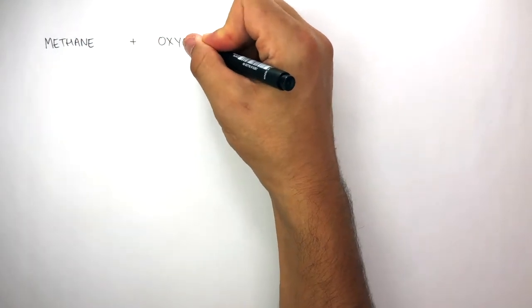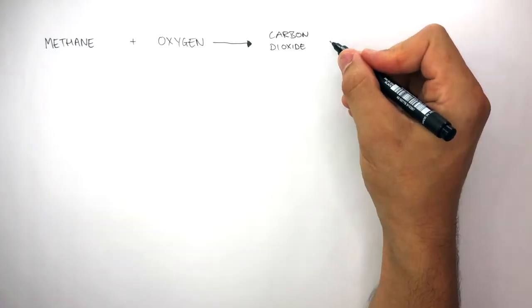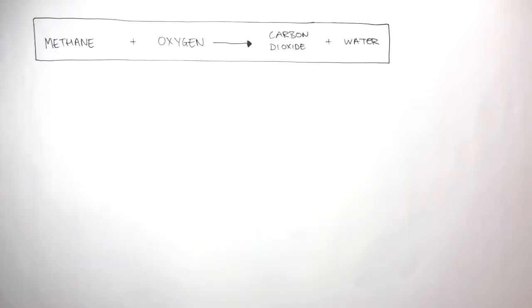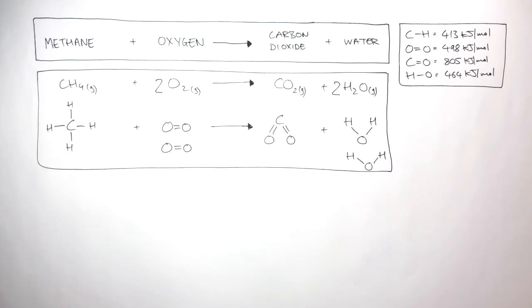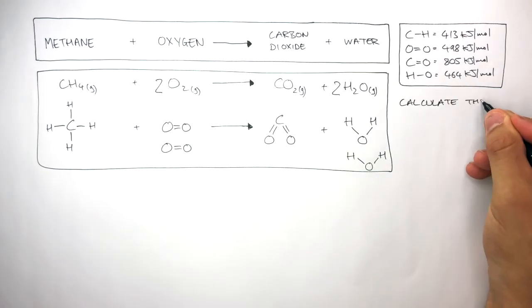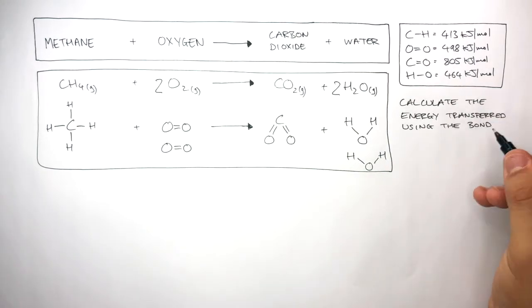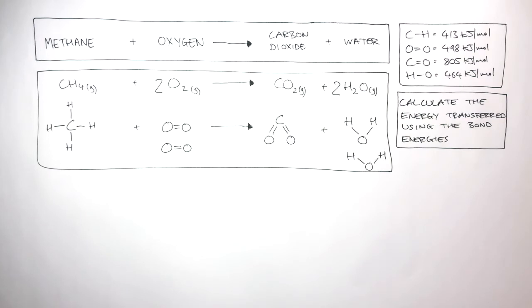In this next example, methane reacts with oxygen to form carbon dioxide and water. These are the bond energies you'll always be given in the exam, along with the balanced symbol equation and the structural formulae of each molecule involved in the reaction. The question is to calculate the energy transferred using the bond energies.